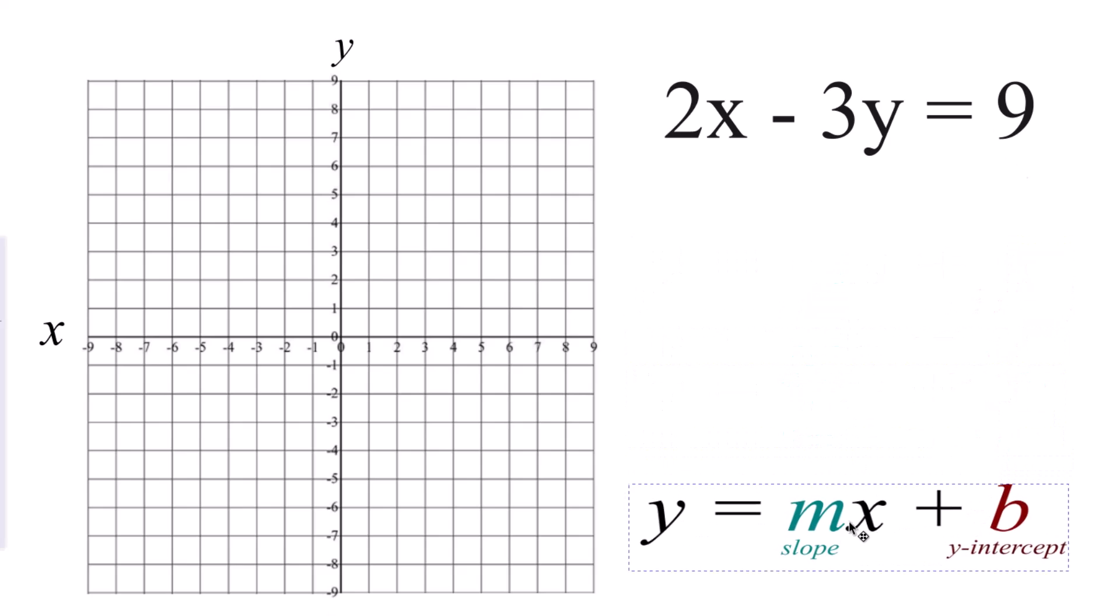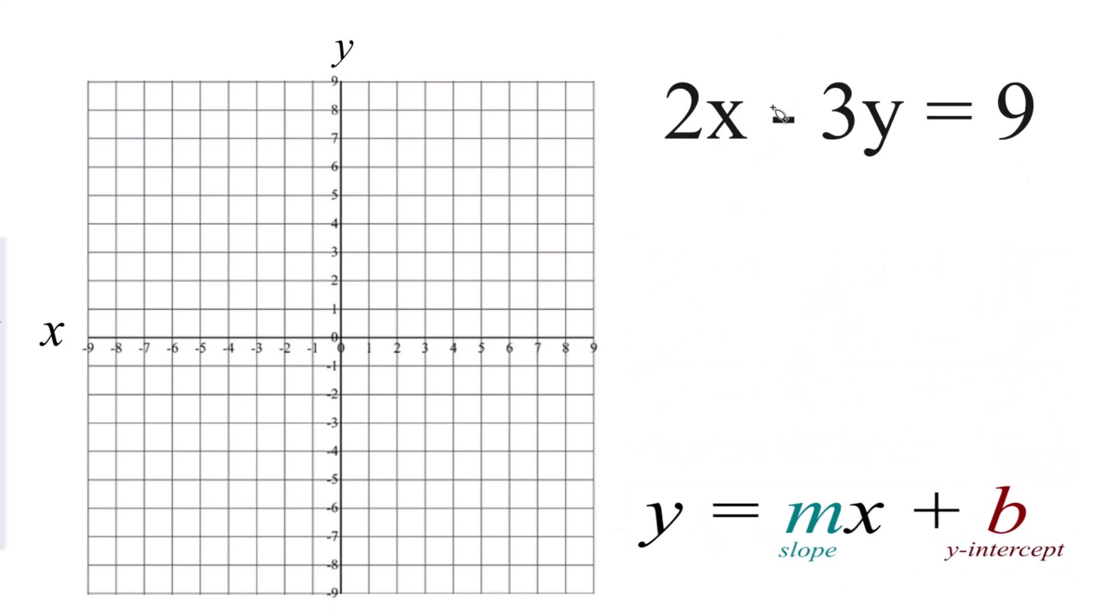And to do that, we need to reorganize this so it's in the form of y equals mx plus b. So let's subtract 2x from both sides. So now we have negative 3y equals 9 minus 2x.